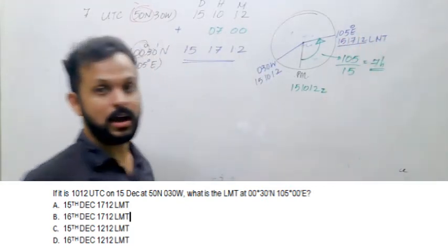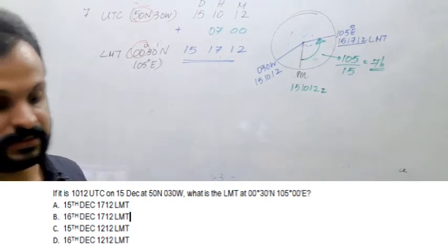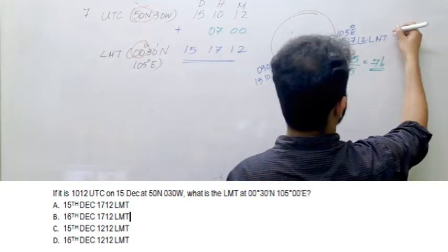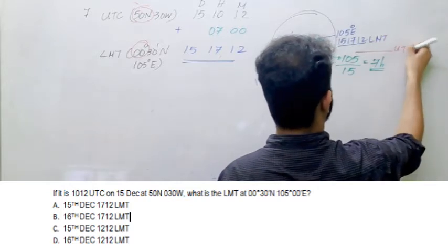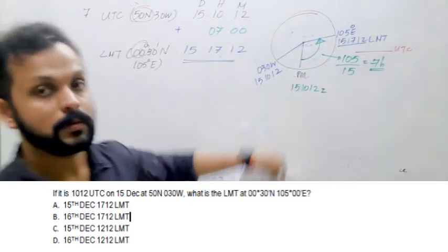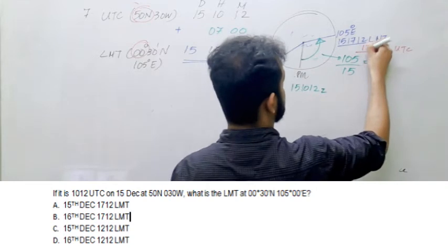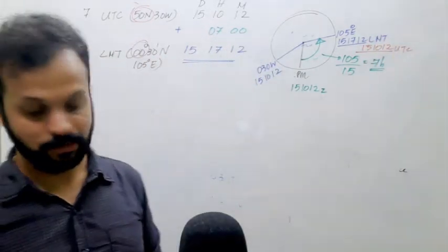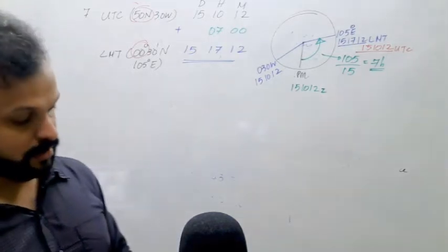Now what if I ask you what is the UTC at 105 degrees east? UTC here. UTC is 1012. That's right. 151012. Very good. UTC is independent of your longitude. It doesn't change with the longitude. Alright.